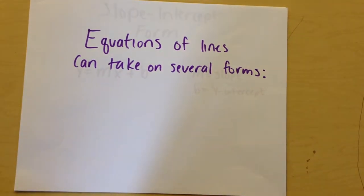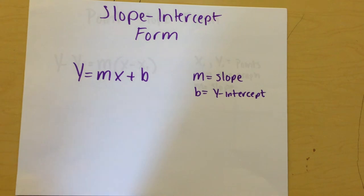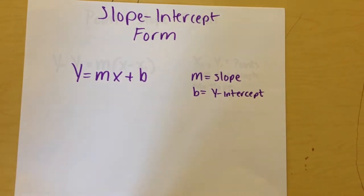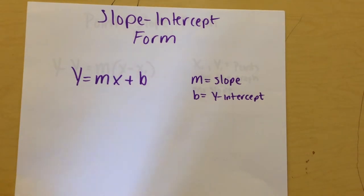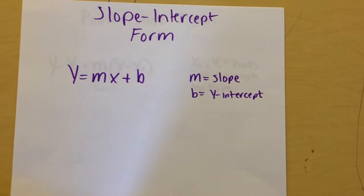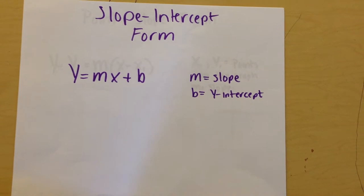Equations of lines can take on several different forms. Slope-intercept form, one of the more common forms, is listed as Y equals MX plus B, where M is equal to the slope and B is equal to the Y-intercept of the line.